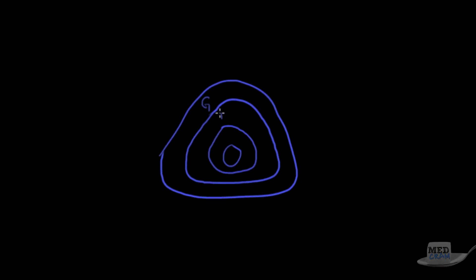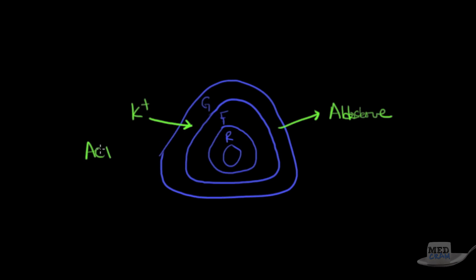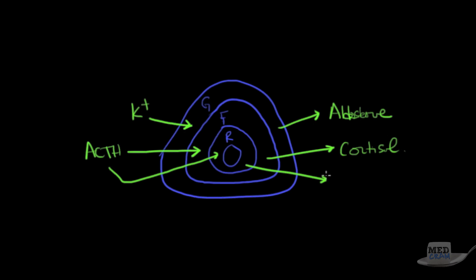To review: the adrenal cortex has three layers — G-F-R from outside in. The outer layer (zona glomerulosa) is stimulated by potassium and makes aldosterone, which works at the distal convoluted tubule of the nephron. The middle layer (zona fasciculata) is stimulated by ACTH and makes cortisol. The inner layer (zona reticularis) is also stimulated by ACTH and makes testosterone.